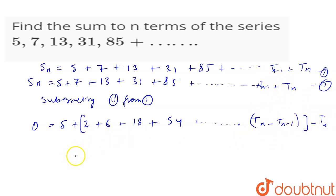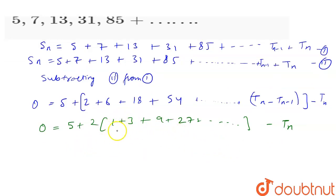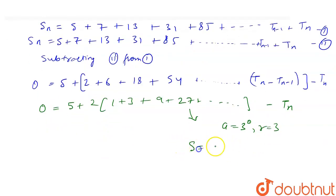So now we can write: 0 is equal to 5 plus, we will take 2 common. So we will get 1 plus 3 plus 9 plus 27 and so on, minus Tn. We can see that this is a GP with A equal to 3 to the power 0 and R equal to 3. The sum of N terms will be A into R to the power N minus 1, divided by R minus 1.